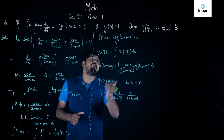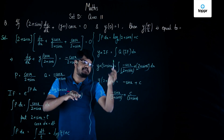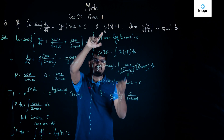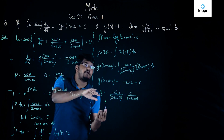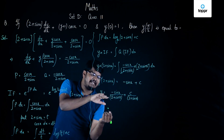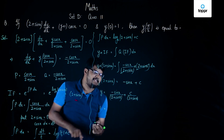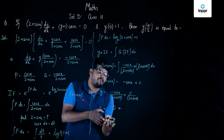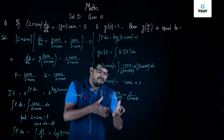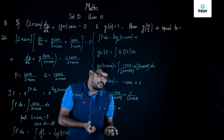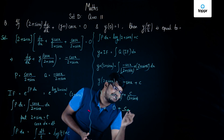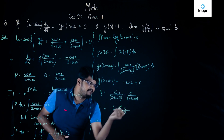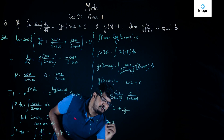We are given that y(0) = 1. Substituting x = 0: 1 = −sin 0/(2 + sin 0) + c/(2 + sin 0). Since sin 0 = 0, this becomes 1 = 0 + c/2, so c/2 = 1, giving us c = 2.